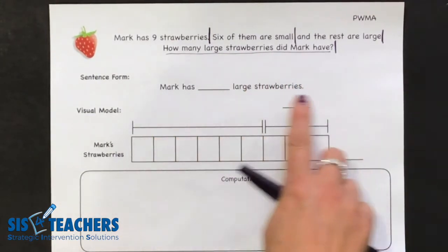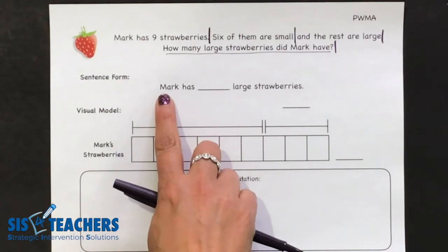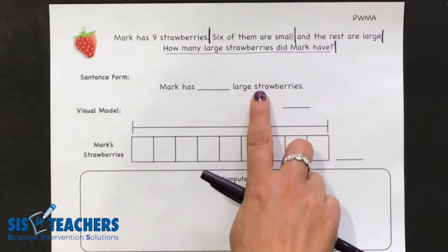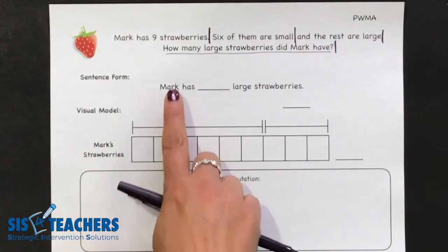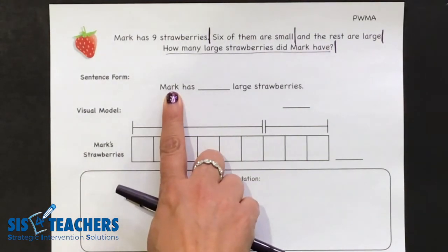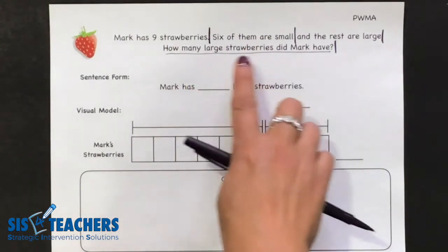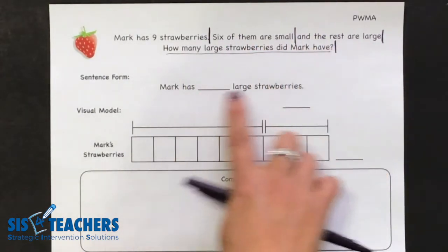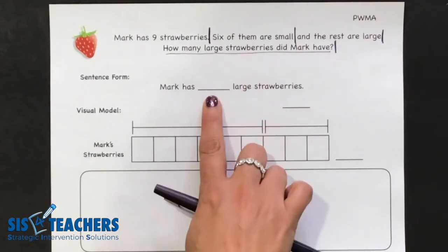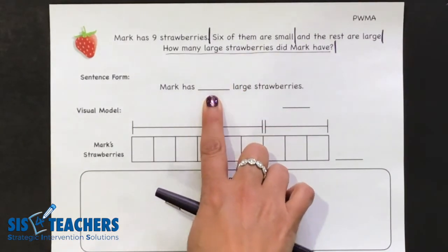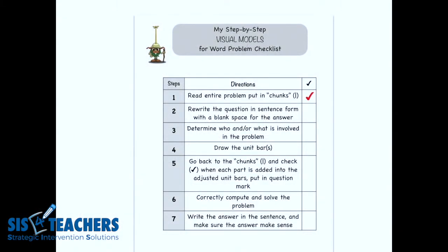Throughout the first grade year, students will eventually be able to start doing their sentence form on their own, and you may put in different blank spaces. The reason for our sentence form is that we know exactly what we're solving the story problem for, so we don't start going and adding or subtracting. We really take some time to process what this question is asking us. We can check off step two because we now have that completed.